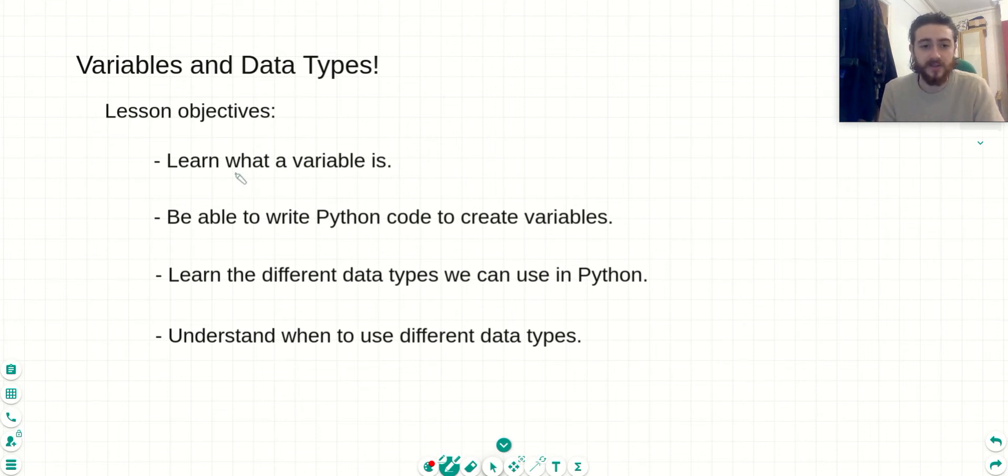Our lesson objectives today are first to learn what is a variable, then we're going to write some Python code to create variables of our own, and then we're going to learn the different data types that we can use in Python, and then hopefully we'll be able to understand when to use the different data types in Python.